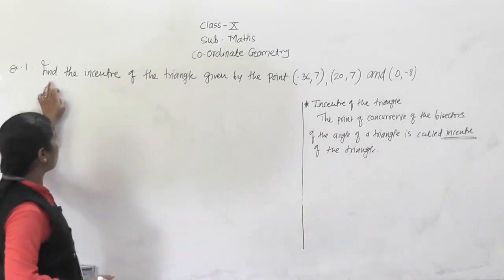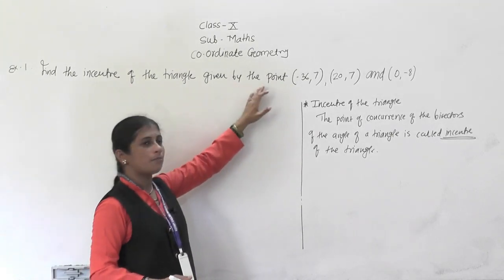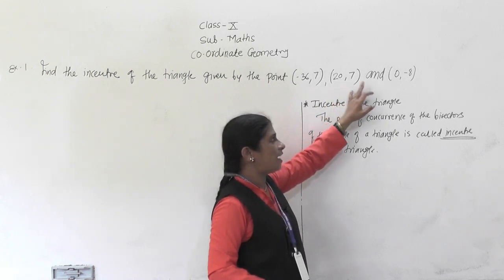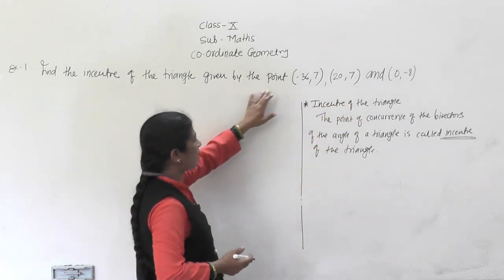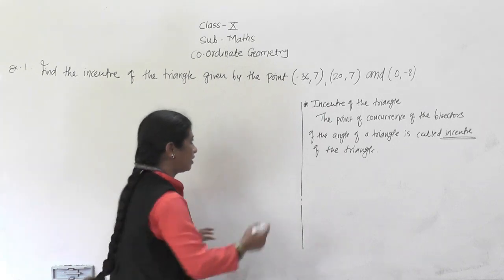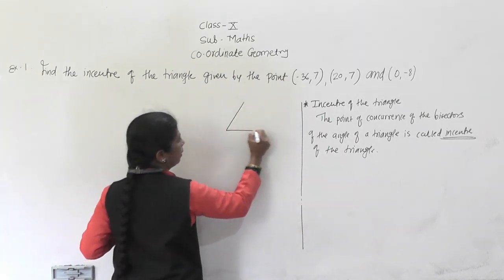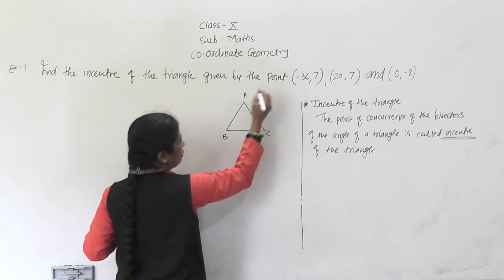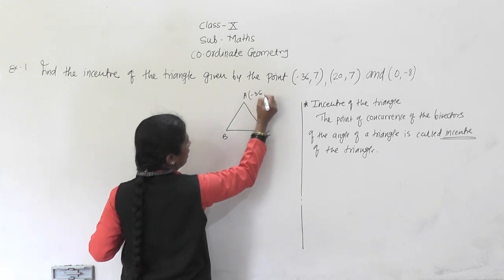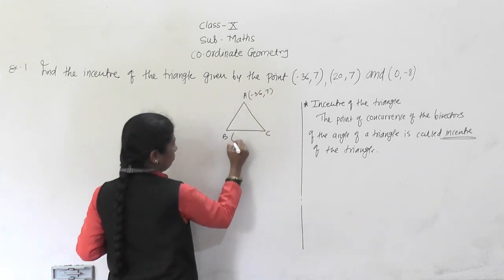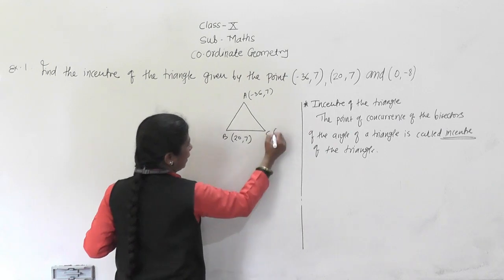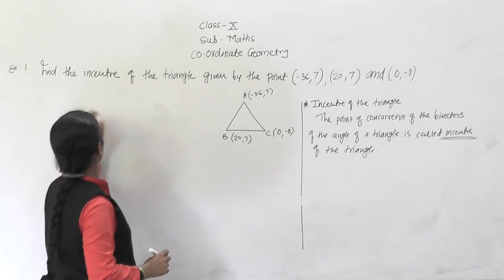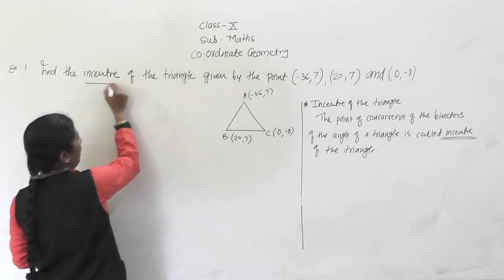First example: find the incenter of a triangle given by the points A(-36, 7), B(20, 7) and C(0, -8). These are the vertices of a triangle, so we will draw a figure — triangle ABC.